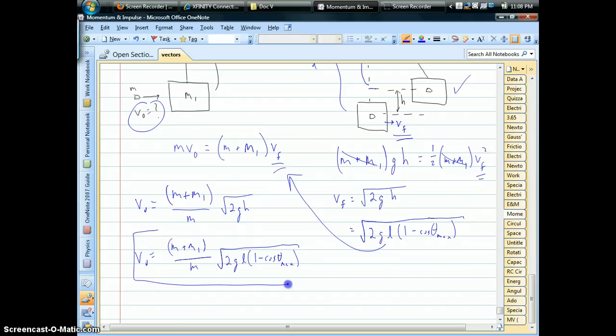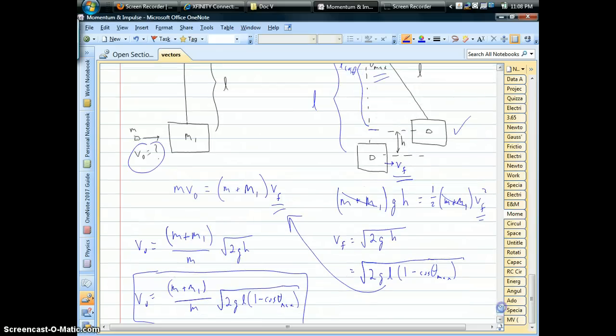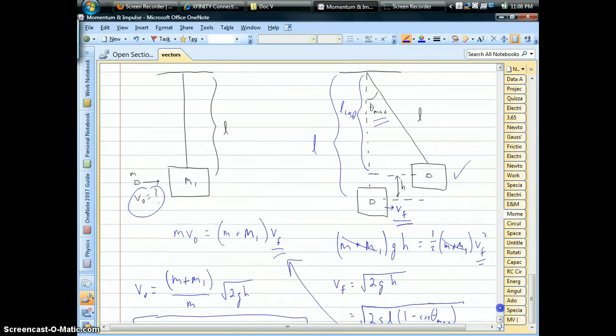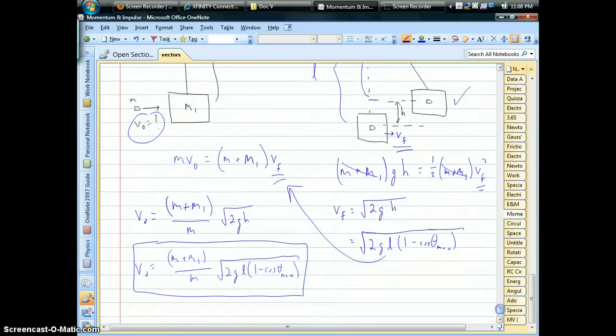So yeah, that's how we end up doing it. It's a great example of inelastic collision where things stick together. And we have to make use of the energy conservation after the collision happens. And in the end we can figure out, in this case, the speed of the bullet beforehand.